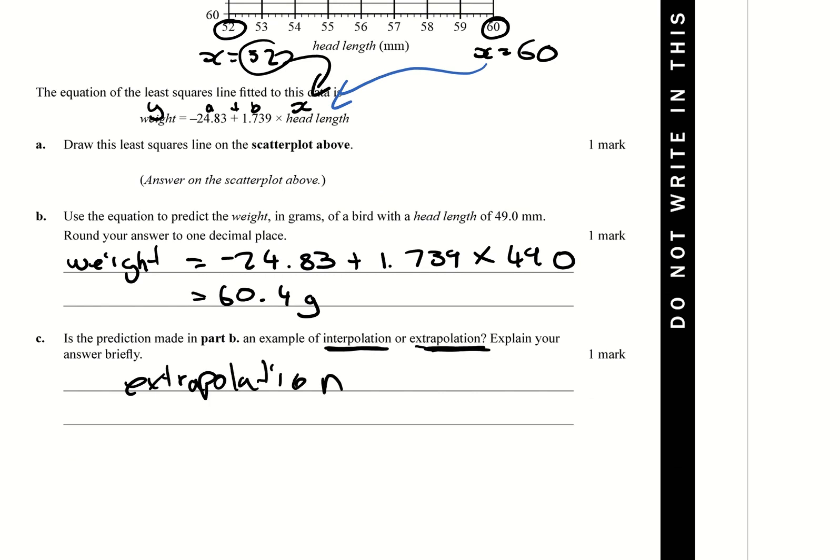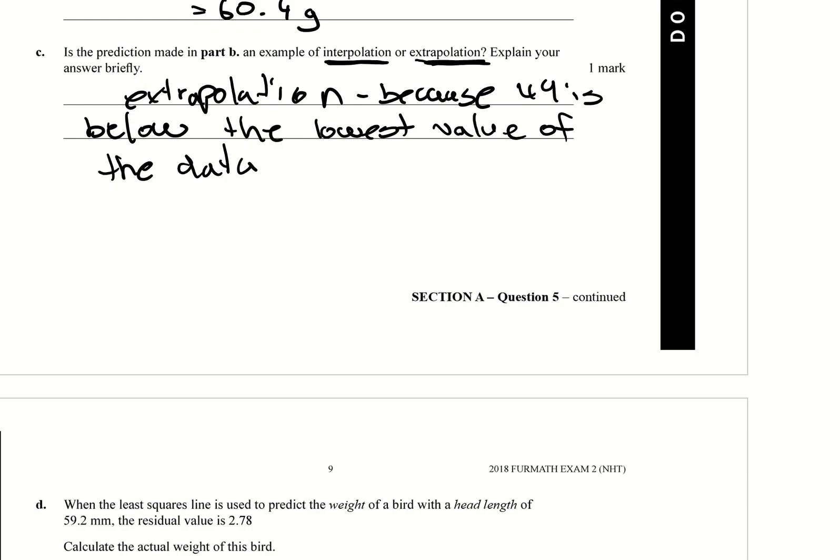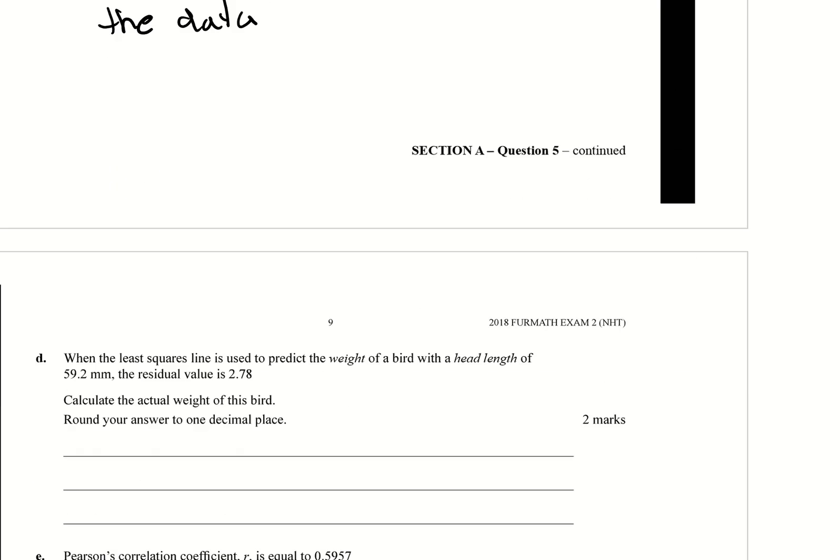And why? You could say, you probably want to write it better than I'm going to write it here. Because 49 is below the lowest value of the data. So it's taking a bit of time to write. Okay, because 49 is below the lowest value of the data.